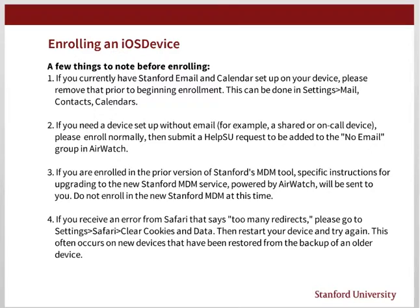This can be done in Settings > Mail > Contacts > Calendars. If you need a device set up without email — for example, a shared or on-call device — please enroll normally, then submit a HelpSU request to be added to the No Email group in AirWatch.